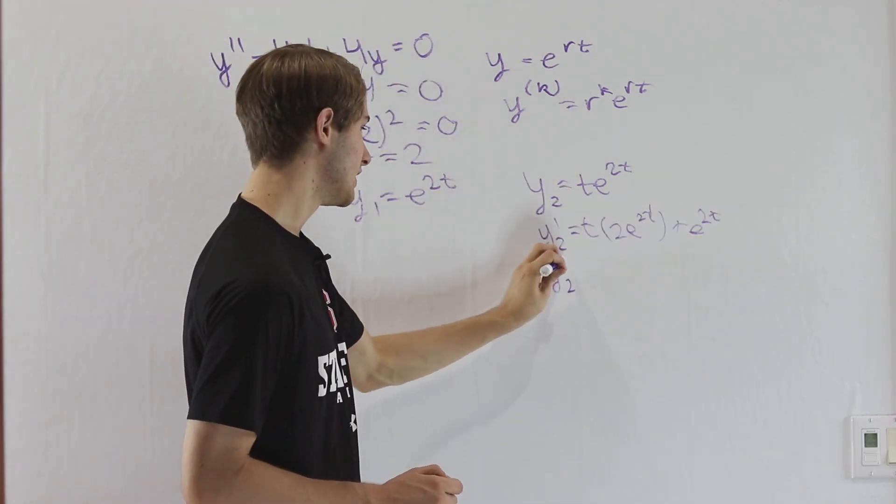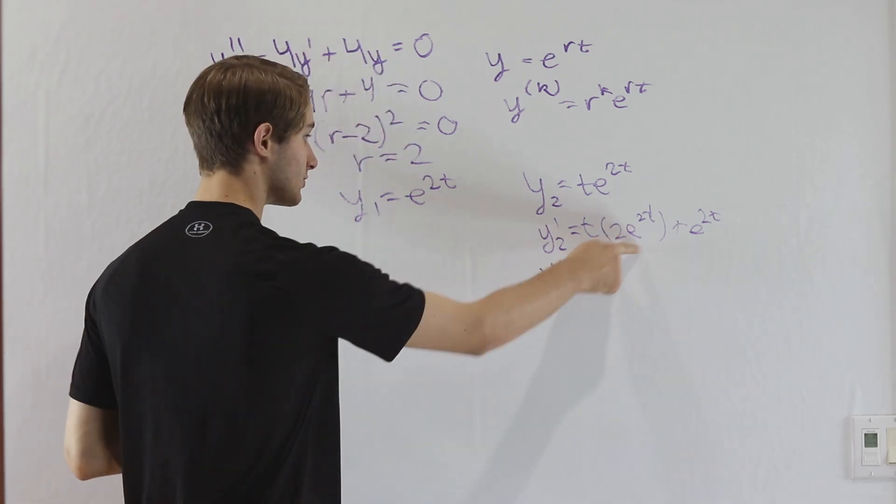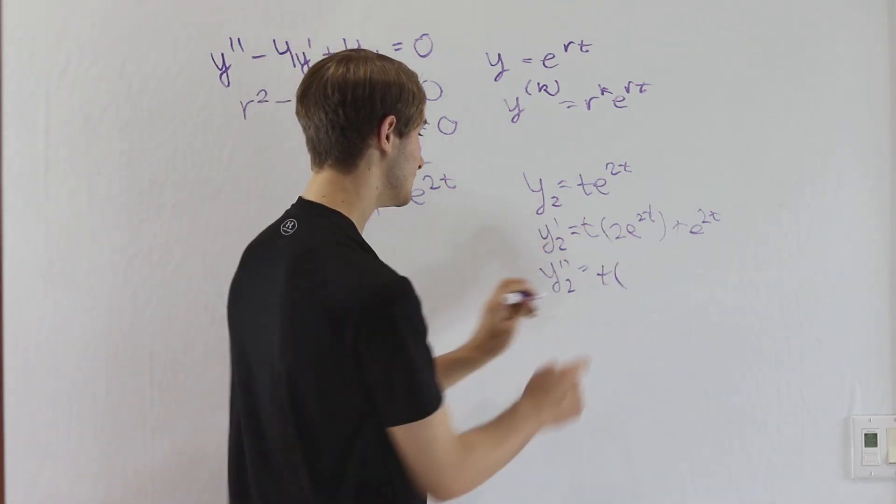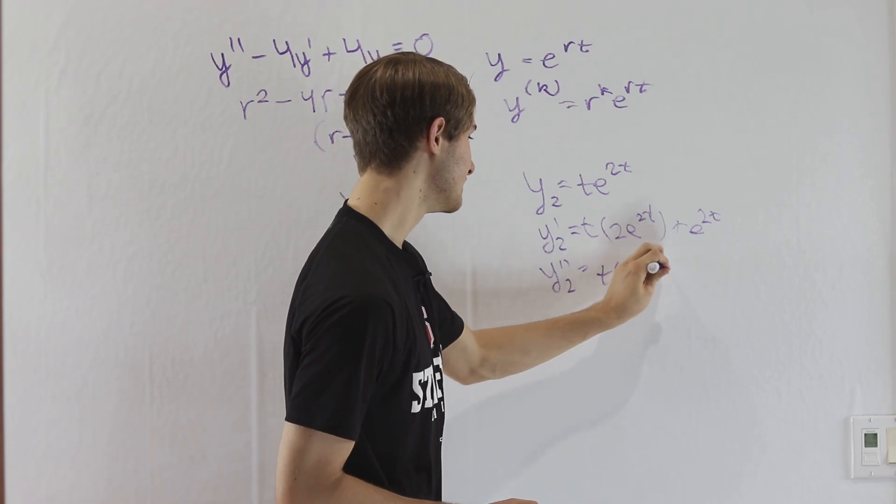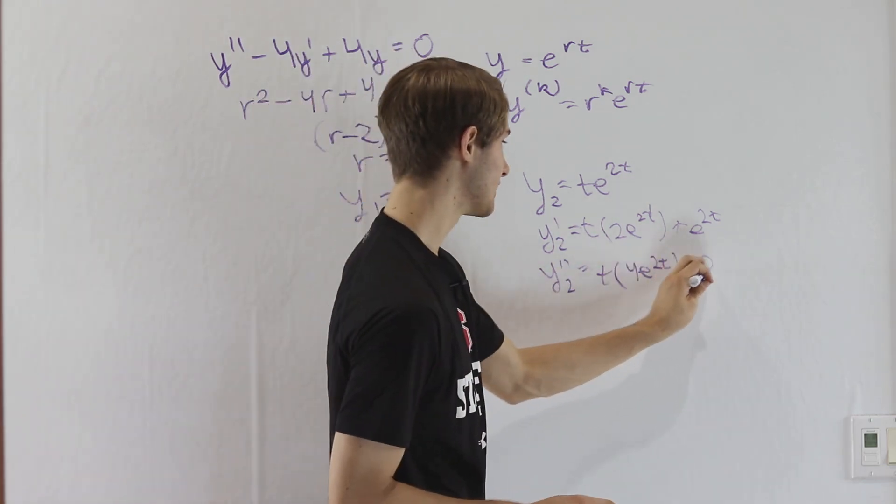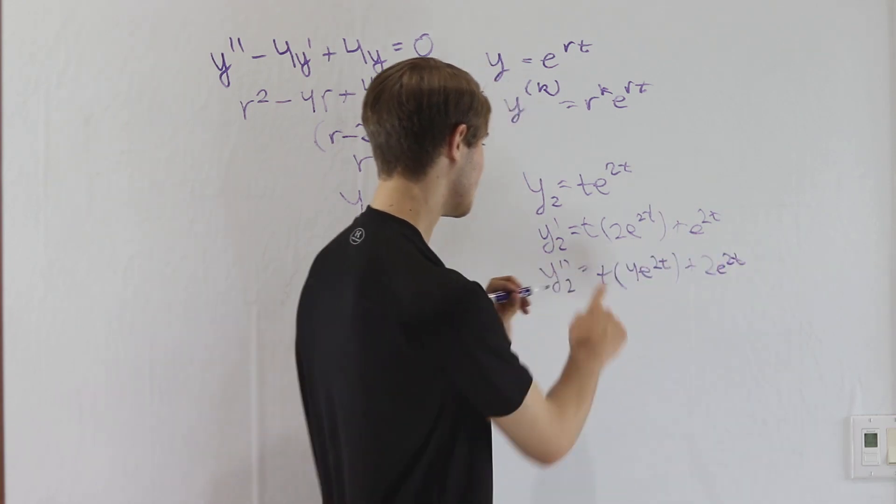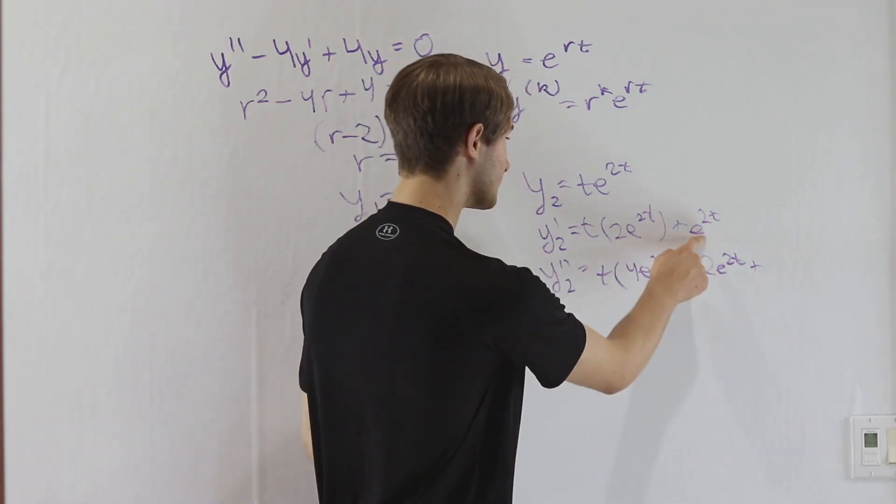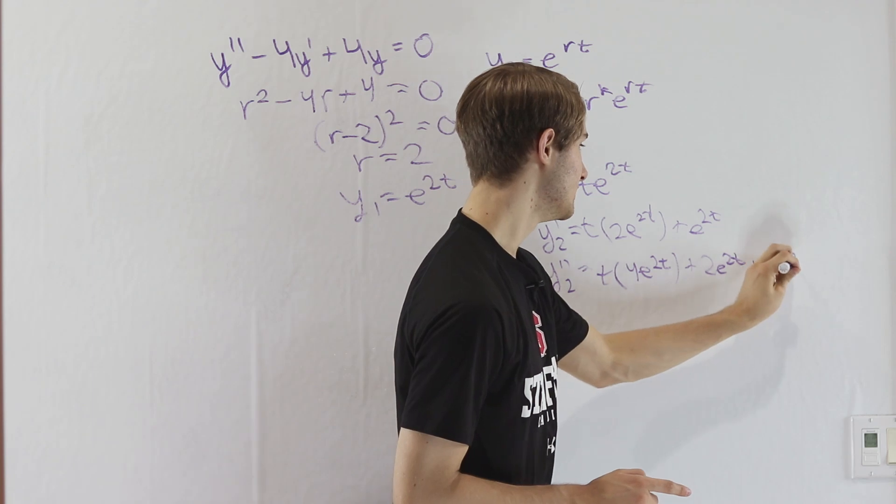The second derivative, y2 double prime, if we do the product rule again, we're going to get t times and then the derivative of this is 4 e to the 2t. And then plus, if we differentiate t here, we'll get 2 e to the 2t times 1. And then plus the derivative of this is again 2 e to the 2t.